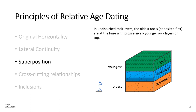Next, we have the principle of superposition, which assumes that the oldest rock layers in an undisturbed sequence are on the bottom and the youngest layers are on top. This is the same concept as putting a book on top of a table and then a pen on top of the book. The table had to be there for you to put the book on it, and the book had to be there for you to put the pen on top.